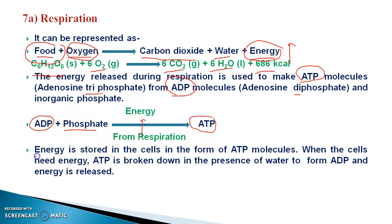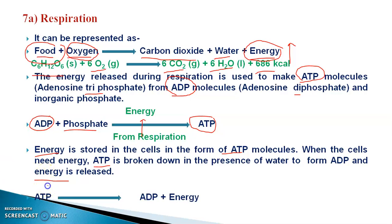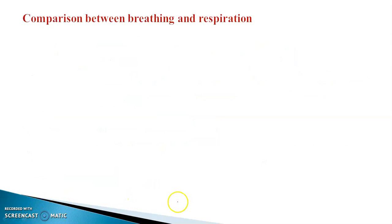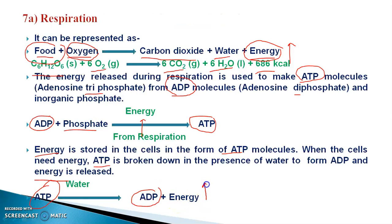Energy is stored in the cell in the form of ATP molecules — this is the packet of energy. Our body uses this energy to perform various activities when needed. Then this ATP breaks down into ADP and releases energy. This reaction goes in reverse when we require energy: this packet ruptures, releases energy, and produces one ADP molecule.